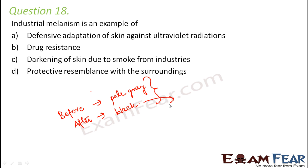Because there were too many industries, there was too much smoke and soot coming out, so the background was darker in color. To protect themselves and for better survival and adaptation, it was found that these variations which increased the quantity of melanin, making the organisms darker in color, were favored by nature.